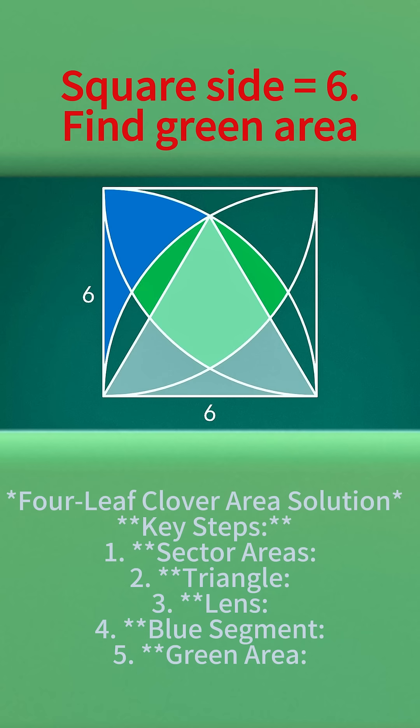So this angle is 60 degrees. Then the angle on the side is 30 degrees. The blue area equals the area of the 30 degree sector minus the area of the segment.